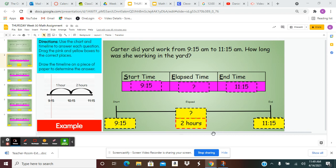If you look at the number line in yellow, you can see that 9:15 has been dragged underneath start time. 11:15 has been dragged underneath end time. And the question mark is in the middle.